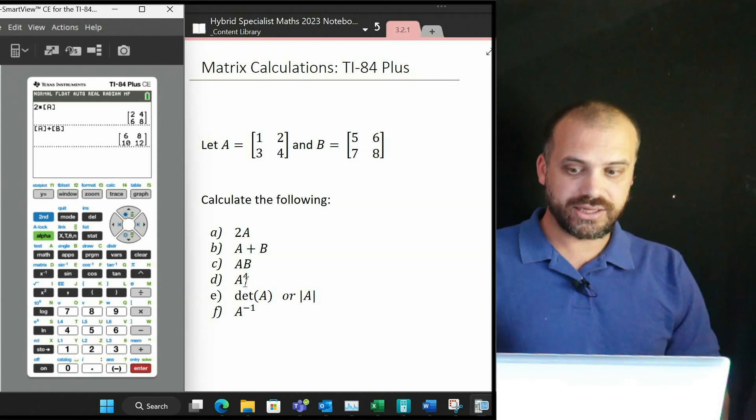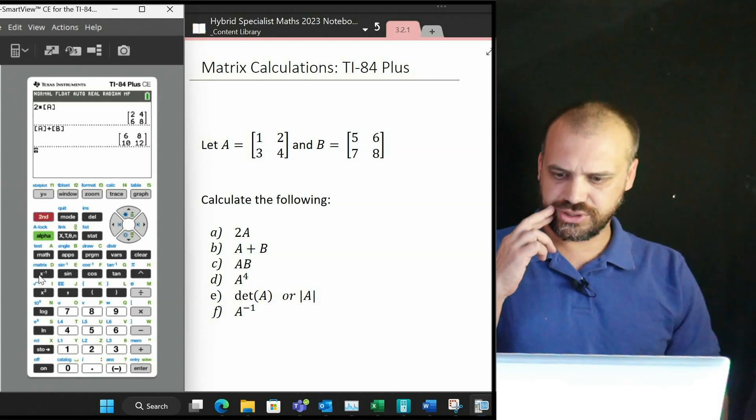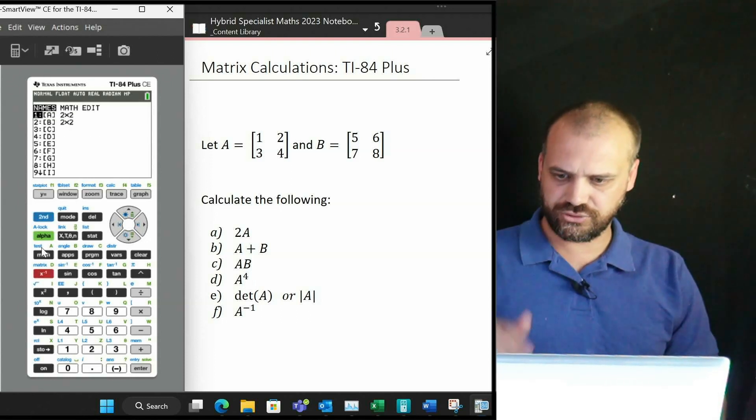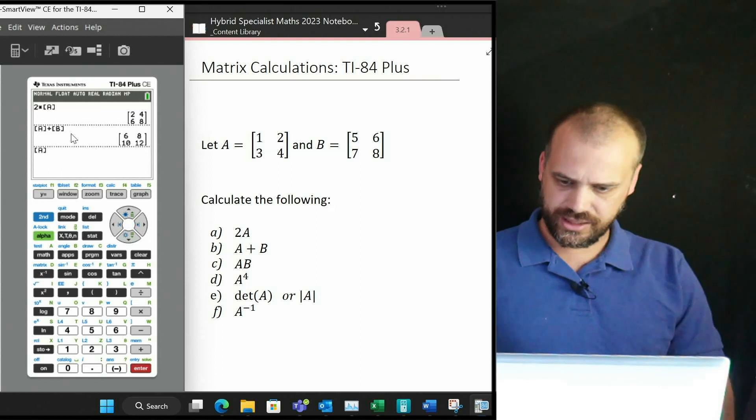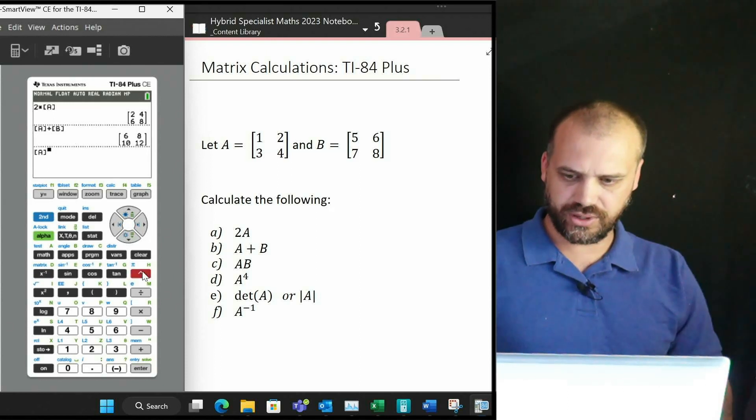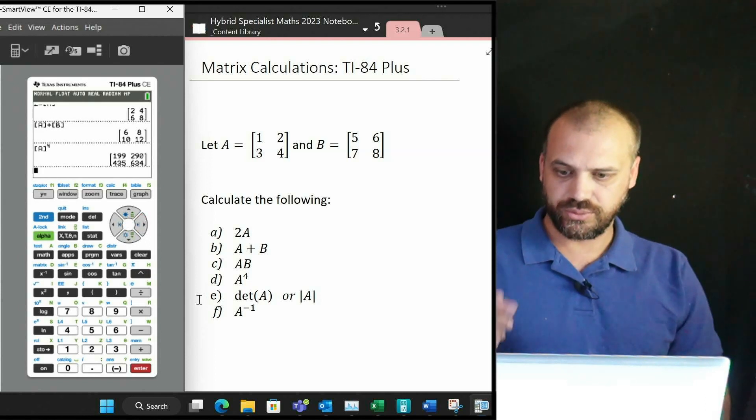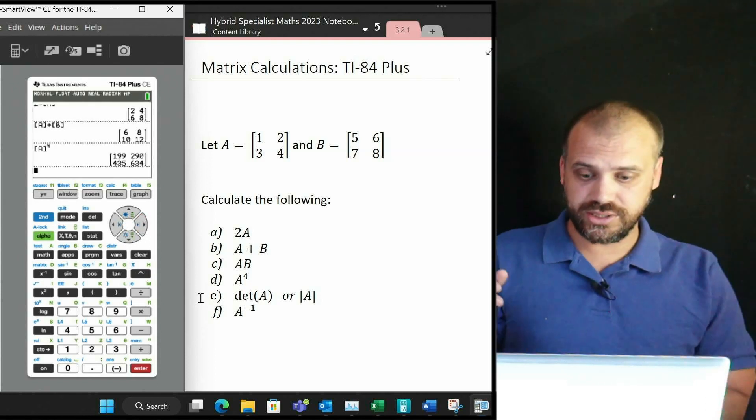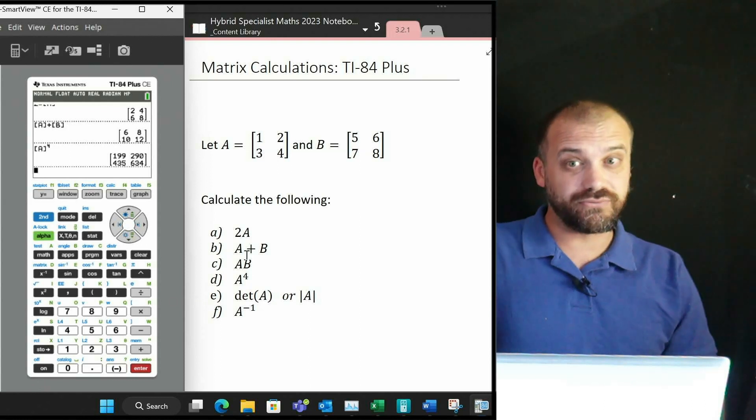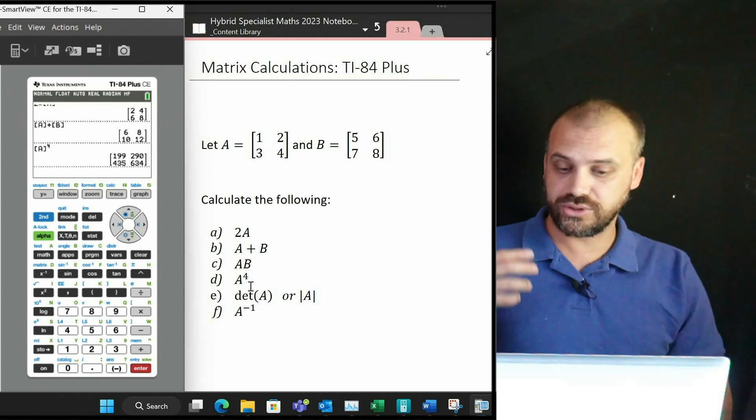Next one: A to the power of 4. Choose your matrix, so second function matrix, choose A, and then raise it to whatever power you want. That's going to be A to the power of 4, which is this. Now you can combine all these, so you could do like A to the power of 4 times B if you wanted to—same deal.